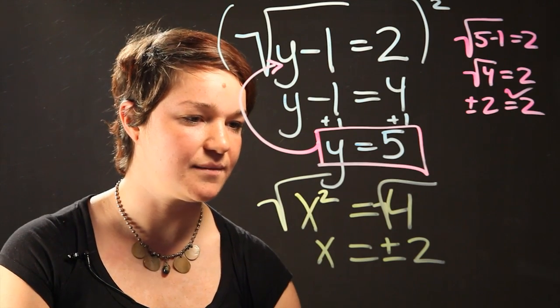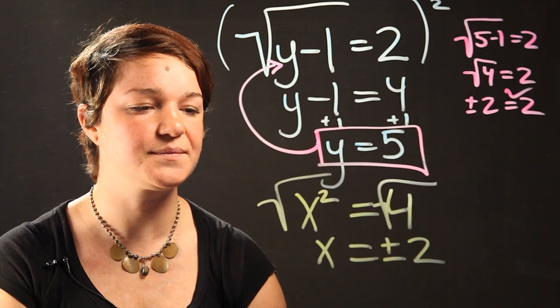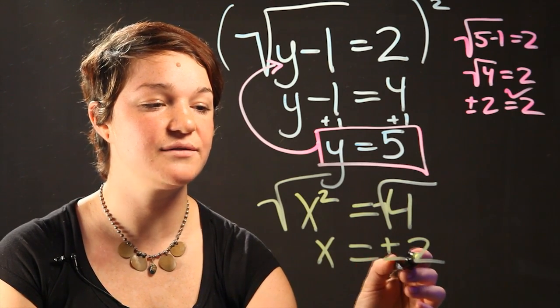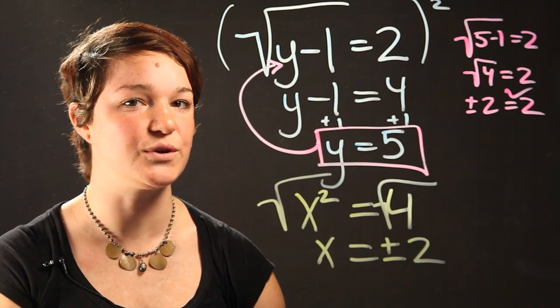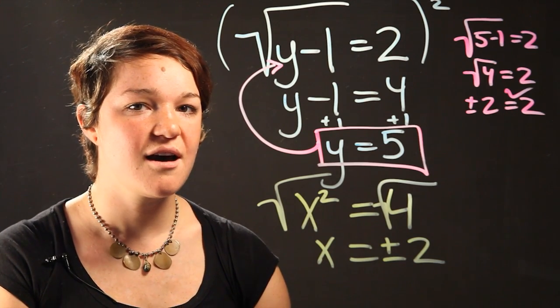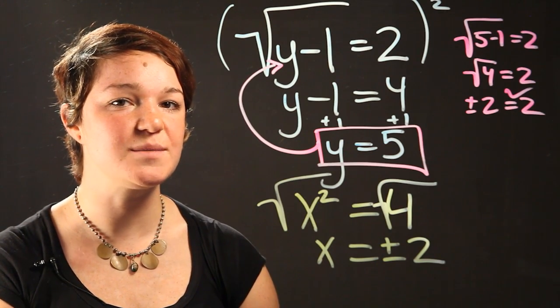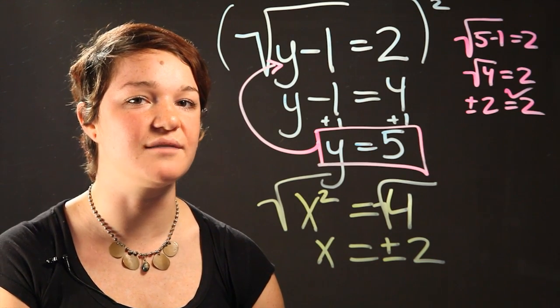So when you plug it back in, plus 2 squared is going to be equal to 4. Likewise, negative 2 squared is also going to be equal to 4. So remember, when you take the square root of a number, the answer is going to be either a positive or negative number.